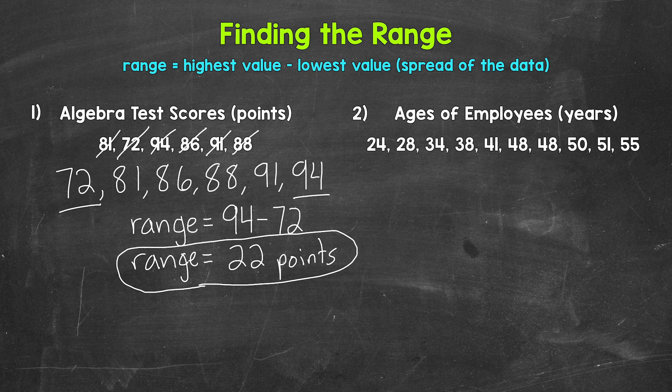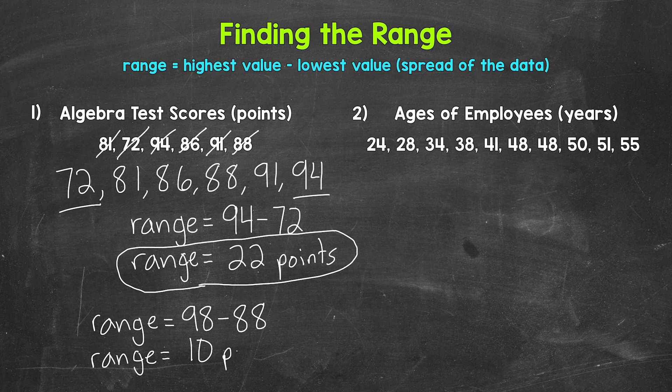For example, let's say that we have another student where the highest score is 98 and the lowest score is 88. So for that student's range, we need to do 98 minus 88. 98 minus 88 gives us a range of 10 points. Now that's a lower range than the student above. That gives us an idea about the spread of that data. That data, the test scores, will be less spread out than the student above. And think about it. The above student, we go from 72 points to 94 points. That's more spread out than the student below. That only goes from 88 points to 98 points.